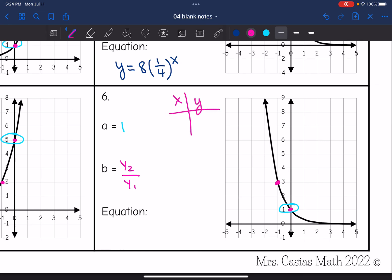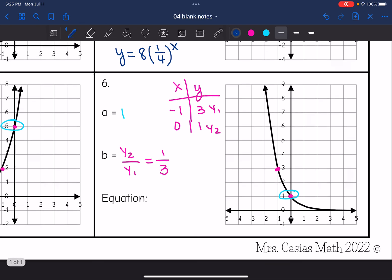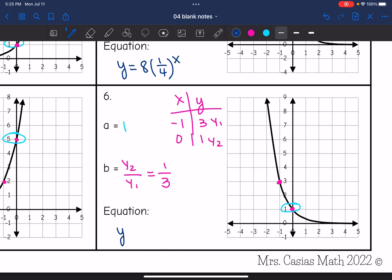That first point will be (-1, 3). And the next point, the y-intercept is (0, 1). So 3 is y1, and 1 is y2. So that means that the b value is 1 third. So that means our equation is y equals 1 third to the x.